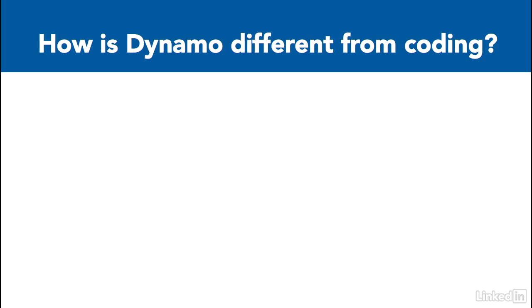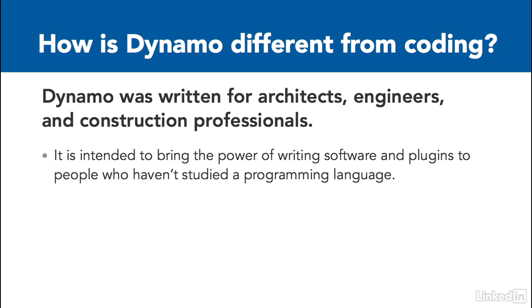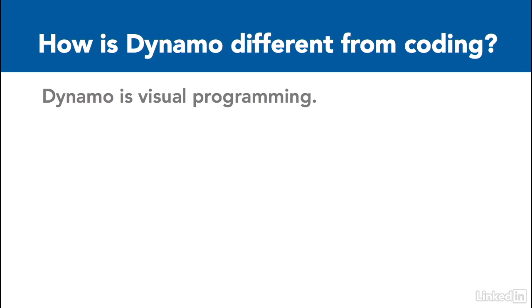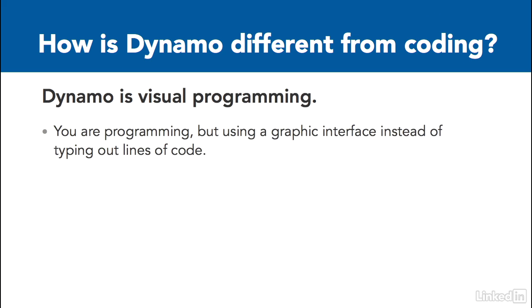How is Dynamo different from learning to code? Dynamo was developed to make the power that comes with coding your own software accessible to people that haven't studied a programming language. Dynamo is what's called visual programming, meaning that you are in fact programming, but instead of typing out lines of code, your algorithm is composed of a series of what Dynamo calls nodes.